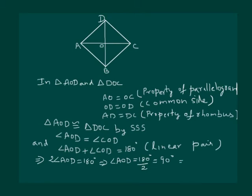And equal to angle COD. Hence we have proved that the diagonals of a rhombus are perpendicular bisectors of one another.